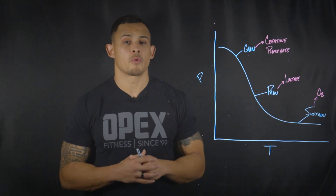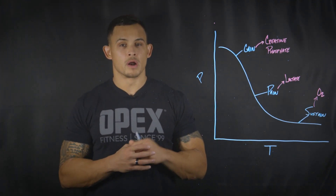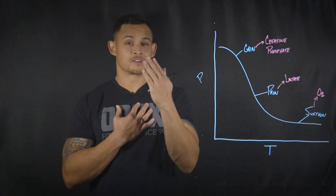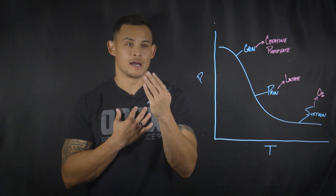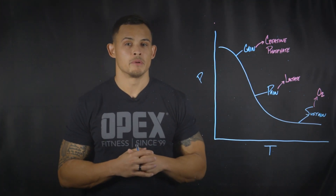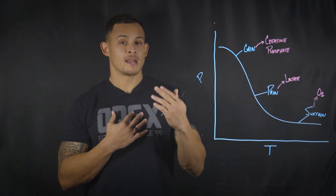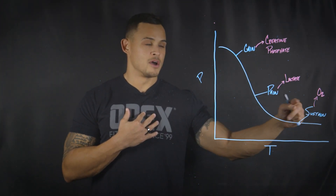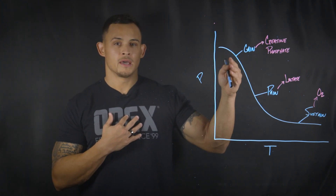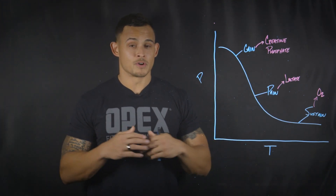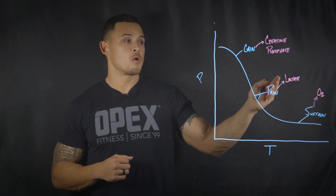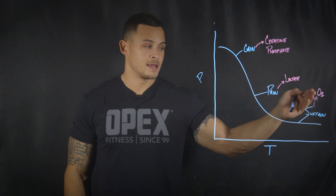It's extremely important to understand that we're never using one of these systems independently. Me walking from here to the camera on the other side, I'm using all of these systems at any given time — but doing that, I'm probably going to utilize the O2 system or OPEX sustain more than the other two. And if I do that sprint for 60 seconds, I'm using lactate as my primary fuel source over creatine phosphate and O2.